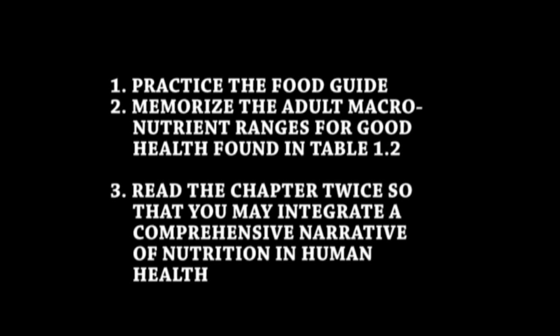Students are directed to practice the food guide at choosemyplate.gov to increase proficiency. First, memorize the adult macronutrient ranges for good health found in table 1.2 in the textbook, including requirements for saturated fat and polyunsaturated fat. Third, read the chapter twice to integrate a comprehensive narrative of nutrition in human health, including the historical background of malnutrition in the United States, chronic disease, and disease in general.